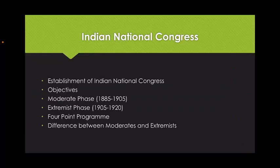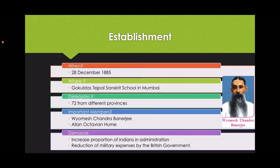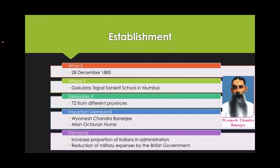Next we are going to see the Indian National Congress. The first session of Indian National Congress was held on 28th December 1885, at Gokuldas Tejpal Sanskrit School in Mumbai. 72 delegates from different provinces of India participated. The important members were Vyomesh Chandra Banerjee and Allan Octavian Hume. Mr. Banerjee was a renowned lawyer from Kolkata and he was the president of the session. Mr. Hume, a British officer, took the lead in establishing the Indian National Congress.